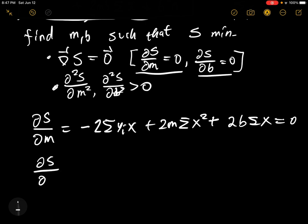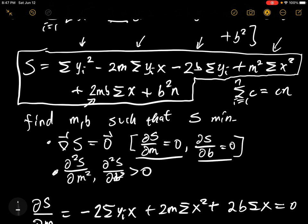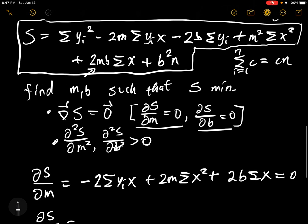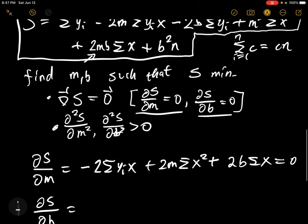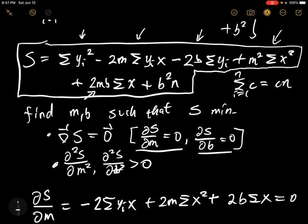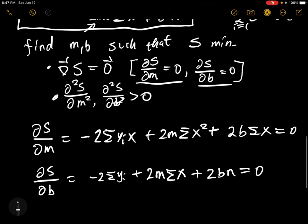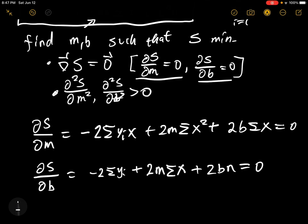Now the partial derivative of s with respect to b: the first term has no b, so it's zero; the second term is also zero; the third term gives minus 2·summation(y_i); the fourth term has no b so it's zero; the fifth term gives plus 2m·summation(x); and the derivative of b²·n gives plus 2b·n. We set this partial derivative equal to zero as well.